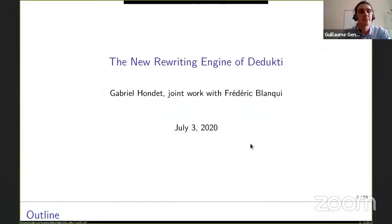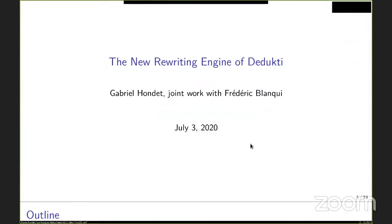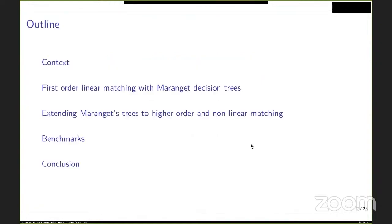Gabriel Ondé is going to talk about the new rewriting engine of DEDUCTIE. This is work done for a Master II internship under the supervision of Frédéric Blanqui and Bruno Barras, with the help of Ordolf Lepig. The talk covers first-order matching using decision trees established by Maranger, extensions to higher-order and non-linear matching, benchmarks, and a conclusion.